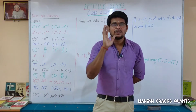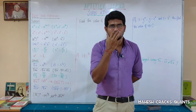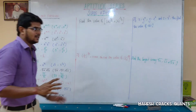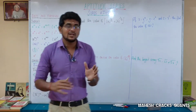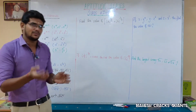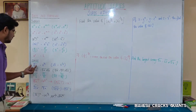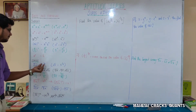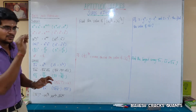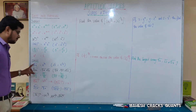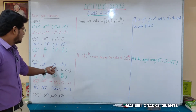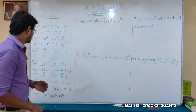Anything power 0 is 1. Next, regarding fractional powers: if the power value is a fraction, it represents a root. The nth root of a is a power 1 by n. That is, the square root of a is a power 1 by 2. So square root of 5 is 5 power 1 by 2.